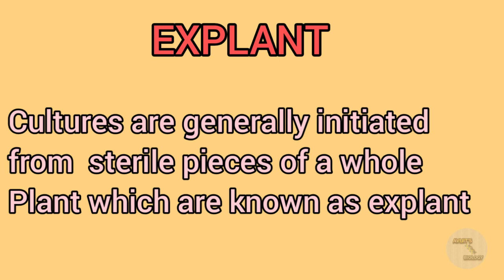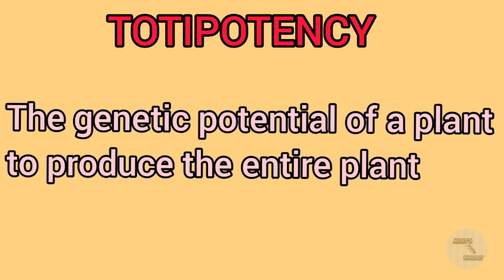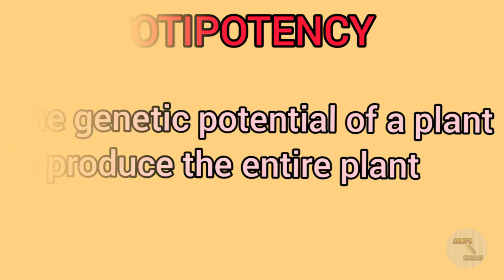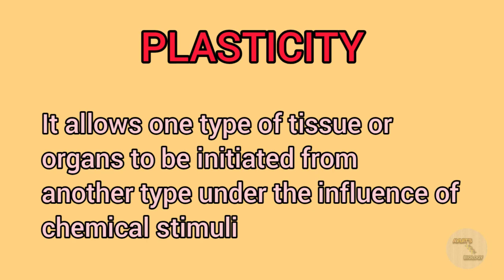Totipotency is the ability of a single cell to divide and produce all the differentiated cells in an organism. It is the genetic potential of a plant cell to produce the entire plant. Plasticity allows plants to alter their metabolism, growth, and development to best suit their environment. This plasticity allows one type of tissue or organ to be initiated from another type under the influence of chemical stimuli, and in this way whole plants can be regenerated from a single cell.